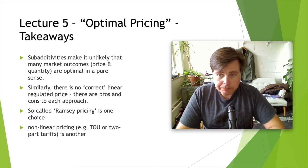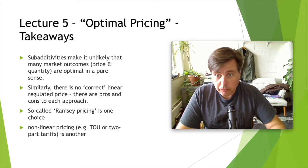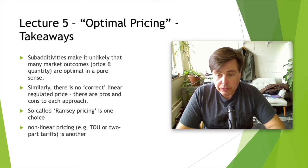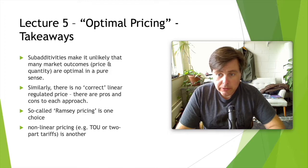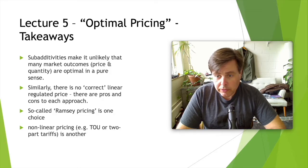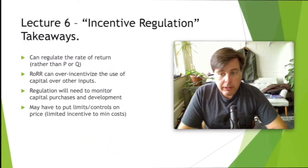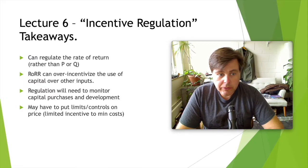In the fifth lecture on optimal pricing, we learned about the concept of sub-additivity, which results in the wrong number of firms operating in an industry. We also learned about techniques to regulate non-linear prices to account for various differences in demand elasticities, and to recognize problems associated with either average cost or fixed cost pricing. Non-linear regulated prices can allow us to account for a firm's fixed costs as well as variable costs within a regulatory structure.